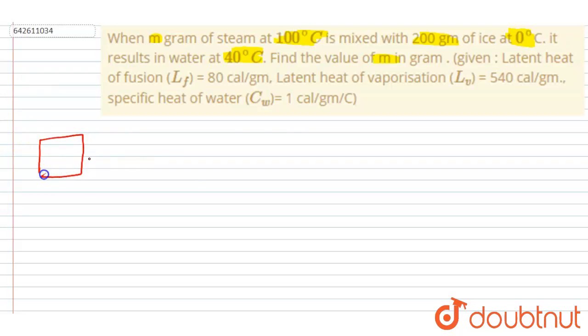So this is the ice, this is the steam at 100°C, and this is the ice of 200 grams and the temperature of this ice is 0°C, right?